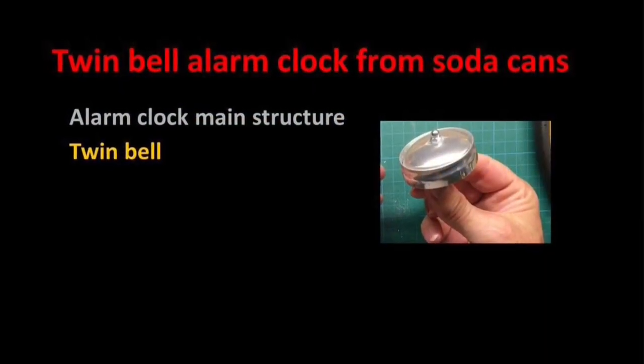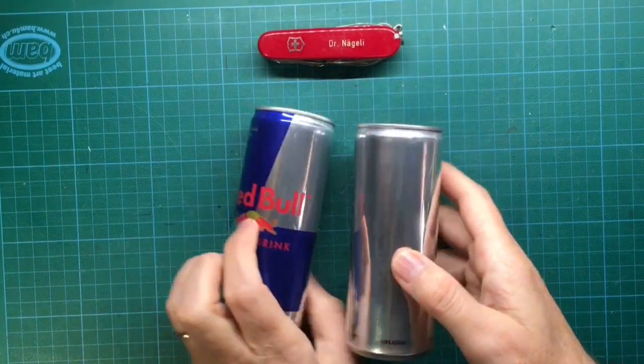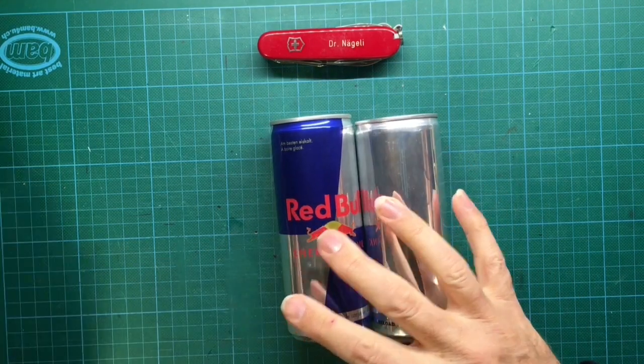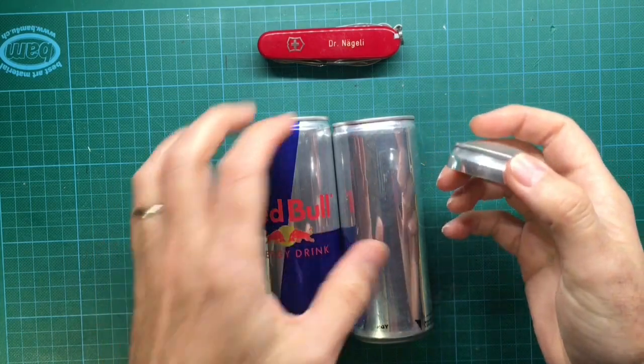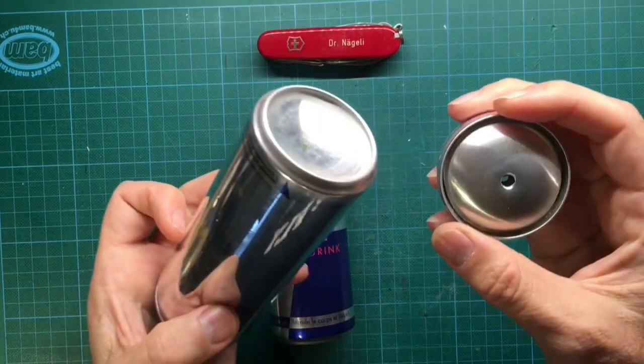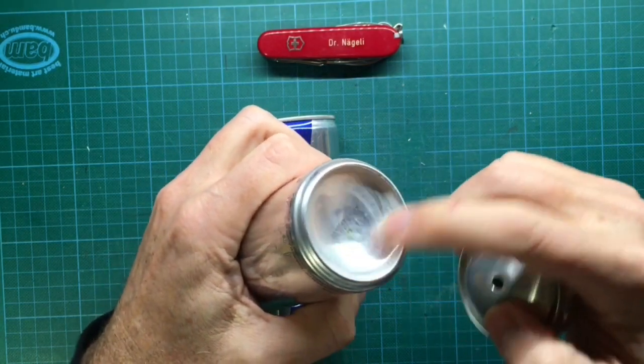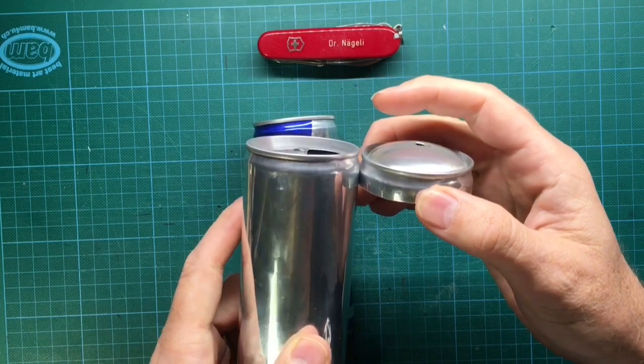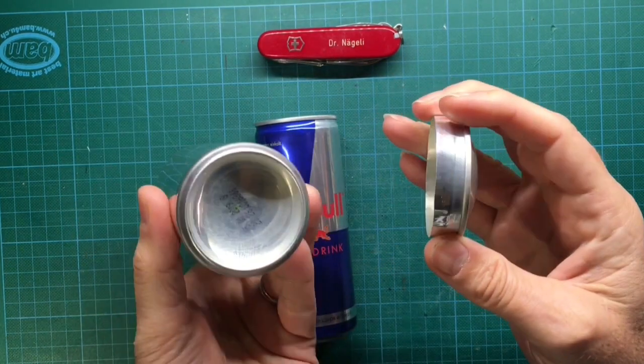The next step covers how to make the twin bells. For the twin bells we need two smaller soda cans. As you can see, the soda cans on the right side already have the ink removed. Now you can see that the round dome is made from the bottom of the soda can. The lower part of the twin bells below the dome is made from the lid of the soda can.